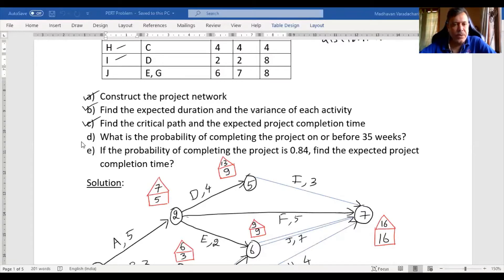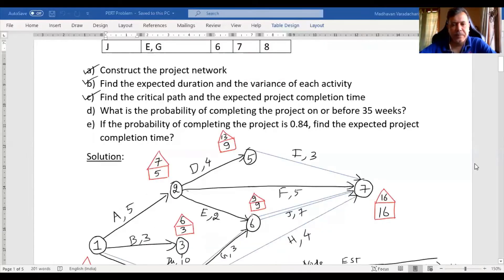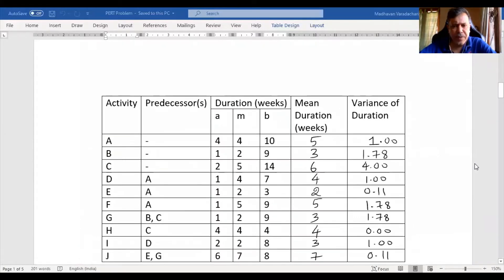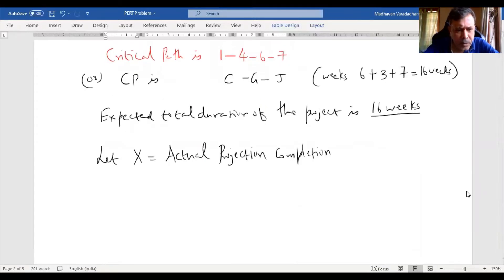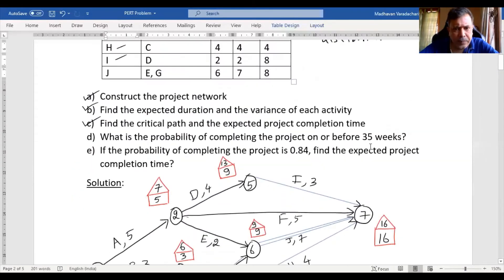So in this video, we are going to solve this question: what is the probability of completing the project on or before 35 weeks? Let us first define that capital X equals actual project completion time. Question is to find out probability of this actual project completion time to be less than or equal to 35 weeks.